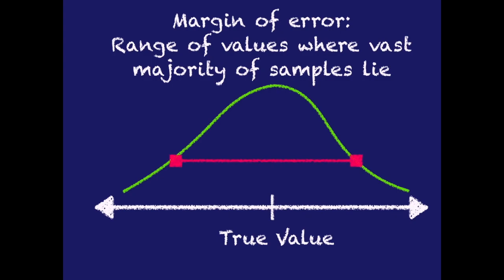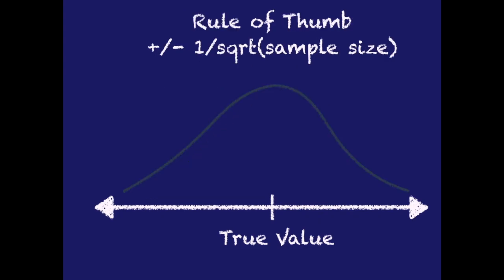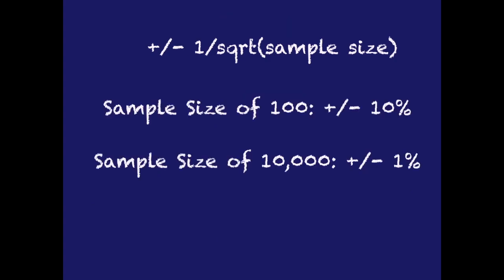The margin of error is the range around the true value where the vast majority of samples are going to lie. There's an entire body of literature on how to calculate these margins of error. A useful rule of thumb: the vast majority of samples are going to lie plus or minus 1 over the square root of the sample size. So for a sample size of 100, estimates will lie roughly within 10% of the true value. For a sample size of 10,000, they'll lie roughly within 1% of the true value.